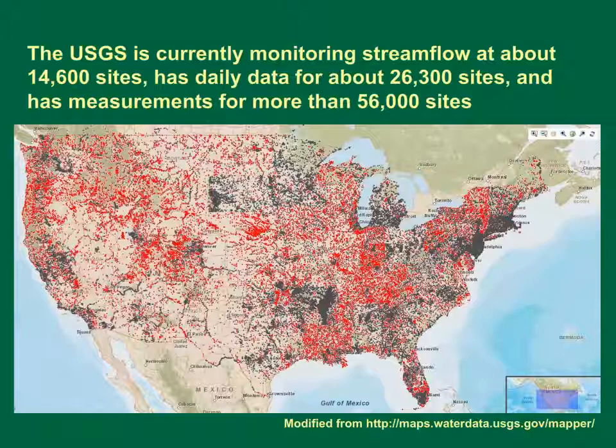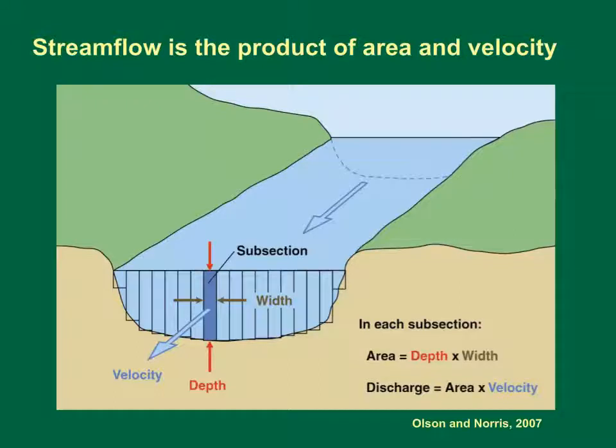The USGS uses stream stage measurements to estimate flows by using a relationship between stage and flow. At most sites, the monitoring station and the stage-discharge relation need constant maintenance by visiting hydrographers. This schematic diagram shows the method used to determine streamflow. The stream is divided into sections, and then the width, depth, and average velocity of each section is measured.